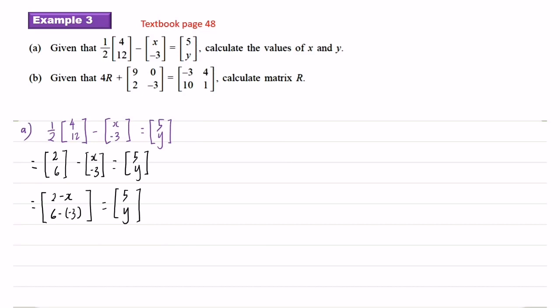Okay, so now we need to find the value of s and y. So I take out the corresponding elements to find the value of s. 2 minus s equals 5. I move over the number. Negative s equals 5 minus 2. Negative s equals 3, so s equals negative 3.